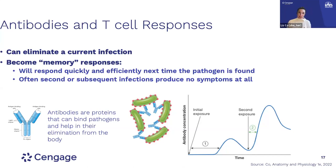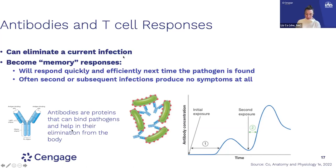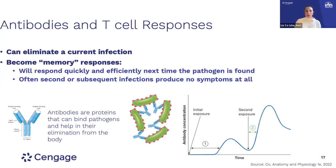Antibodies and T cell responses are the main things that can happen in an immune response, especially in the lymph node. Antibodies are proteins that can bind pathogens and help in their elimination from the body — I like to think of them as facilitating the exit or elimination of the pathogen. Between antibodies and T cell responses, we can begin to turn the infection around, eliminate the pathogen, and restore health.